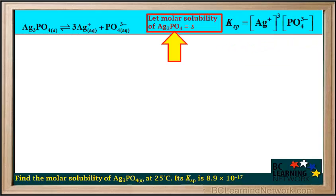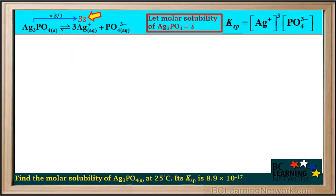We'll represent the molar solubility of Ag3PO4 by the letter S. We see from the equilibrium equation that the mole ratio of Ag+ to the compound Ag3PO4 is 3 to 1, so the concentration of Ag+ will be equal to 3s. The equation also shows that the mole ratio of PO4 3- to Ag3PO4 is one to one, so the concentration of PO4 3- is just equal to s.